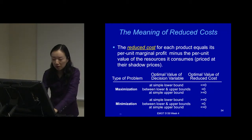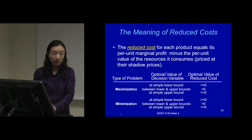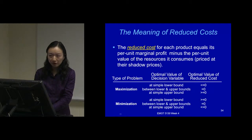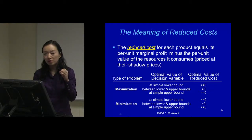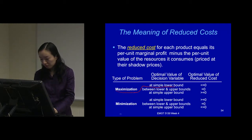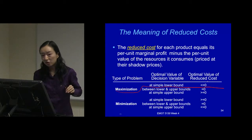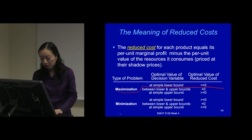For maximization problems, here is a table that summarizes the reduced cost. If the optimal value of the decision variable is at a simple lower bound — for example, x_i ≥ 0, so zero would be the simple lower bound — then the reduced cost of that decision variable should be negative. That's exactly what we just talked about — that's negative 13, and that decision variable x3 equals zero.